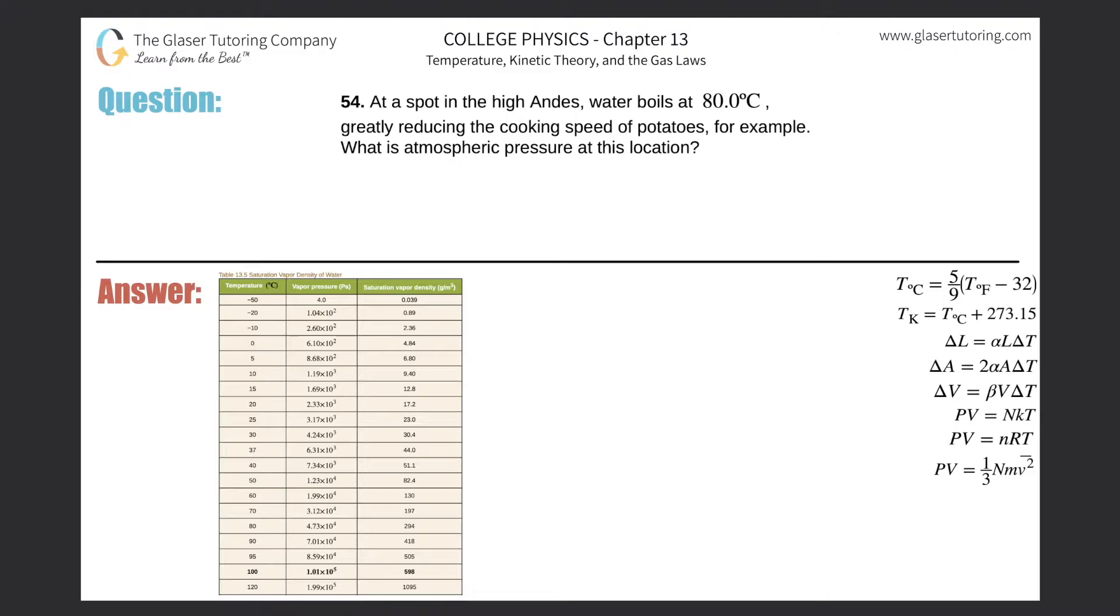Number 54: At a spot in the high Andes, water boils at 80 degrees Celsius, greatly reducing the cooking speed of potatoes, for example. What is atmospheric pressure at this location? Alright, so if you know the temperature at which water boils, then you will also know the atmospheric pressure.